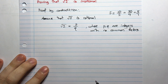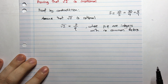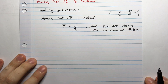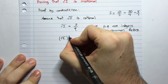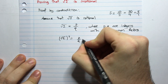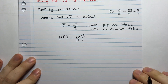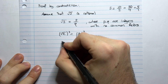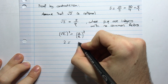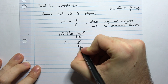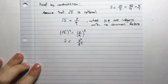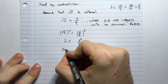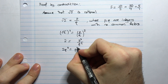I've assumed that root 2 is rational, therefore root 2 equals p over q, where p and q are integers with no common factors. Let's square both sides: root 2 squared is 2, and the right side gives p squared divided by q squared. Multiplying both sides by q squared, I get 2q squared equals p squared.